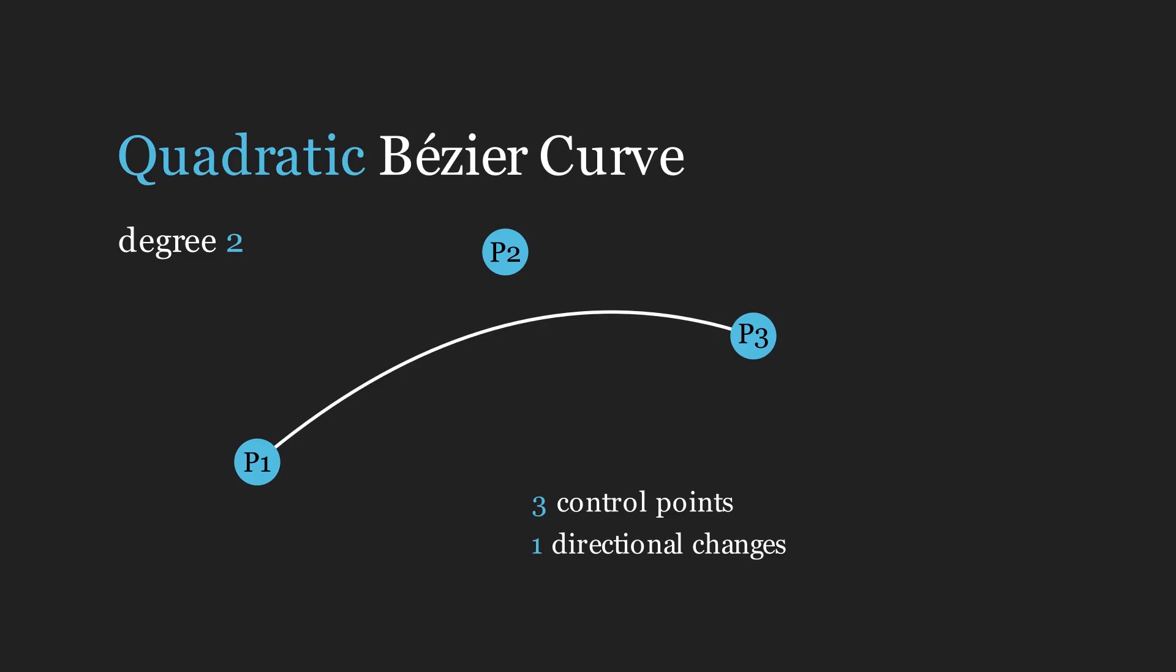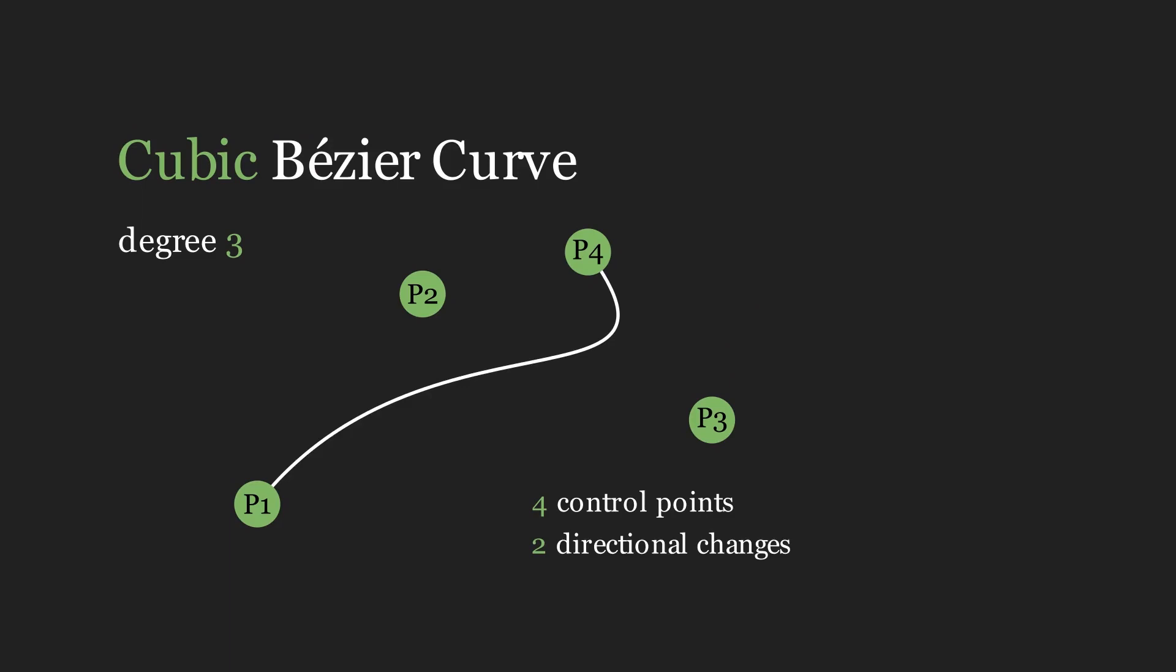A quadratic Bezier curve has a degree of two and can have at most a single direction change. Similarly, a cubic Bezier curve can have two direction changes.